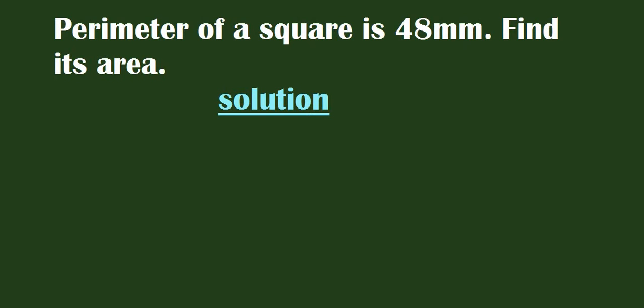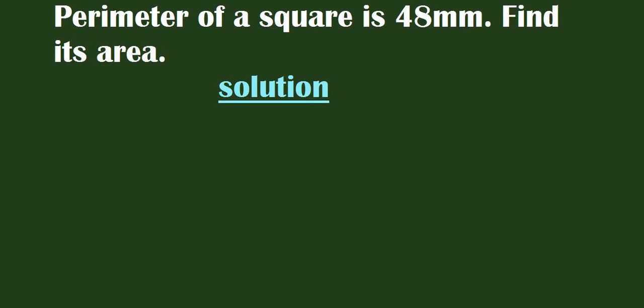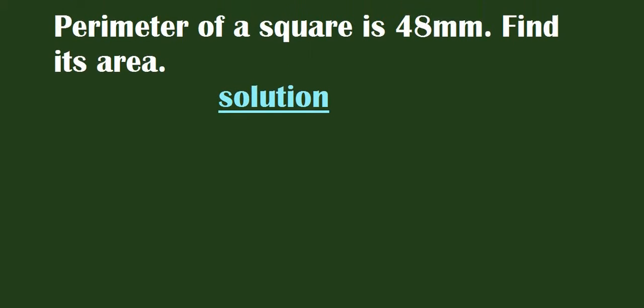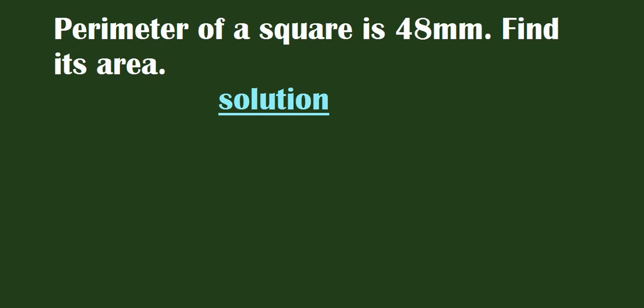Welcome. The perimeter of a square is 48 millimeters. Find its area. We have been given the perimeter of this square, so we are going to write the formula for finding the perimeter of a square so that we can get the length of one side. And then after that we will be able to calculate the area of this square.